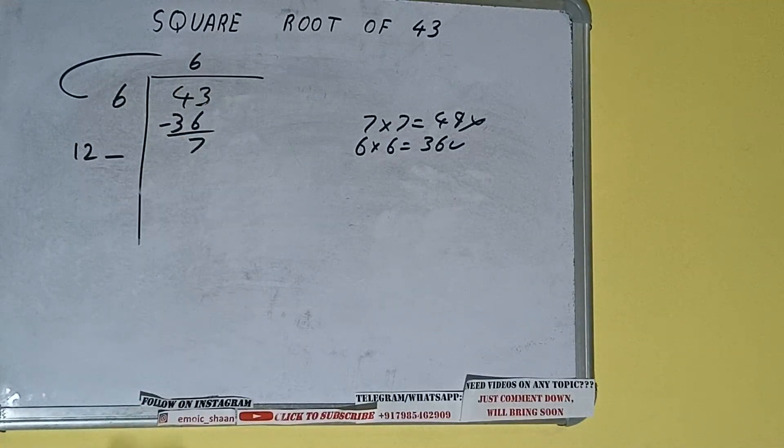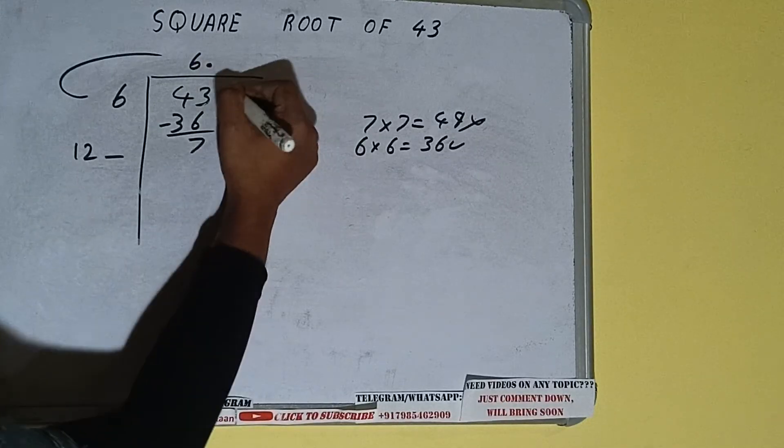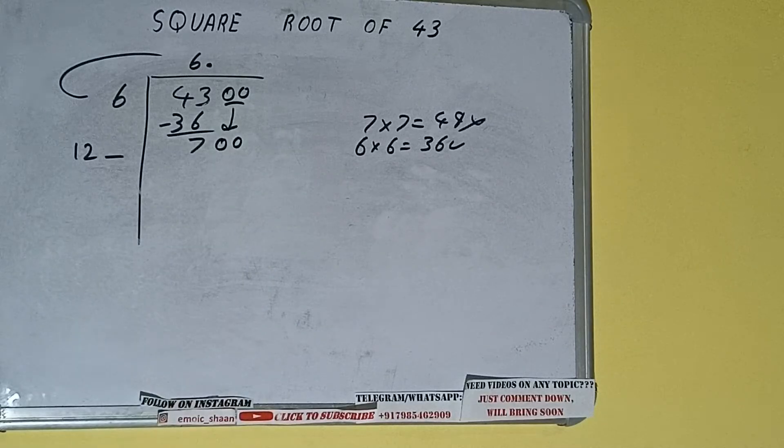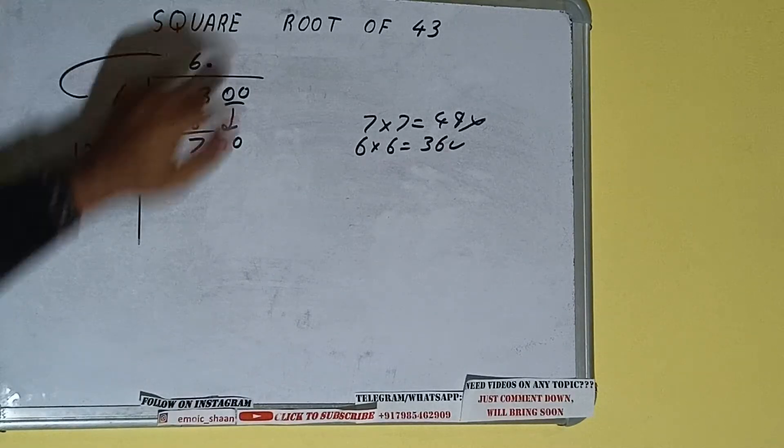So we'll put a decimal. Once we put a decimal, we can bring a pair of zeros down and the number will become 700. Now whatever number we write here, we have to write here also.